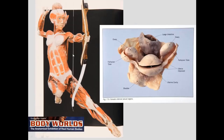Here we see some of the female organs — the breast, the uterus, the uterine cavity, two ovaries, and the urinary bladder.